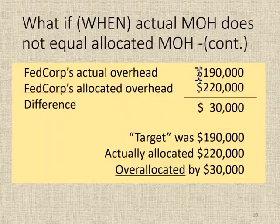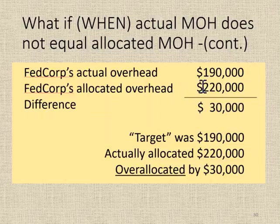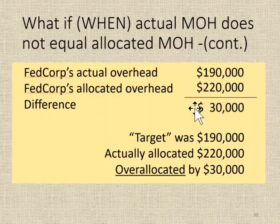In this case, their actual overhead came out to be $190,000 — that's after we got all the bills in and added them together. But we allocated $220,000 based on our predetermined manufacturing overhead rate. This means we did something called over-allocation — we allocated more overhead than we should have by $30,000.